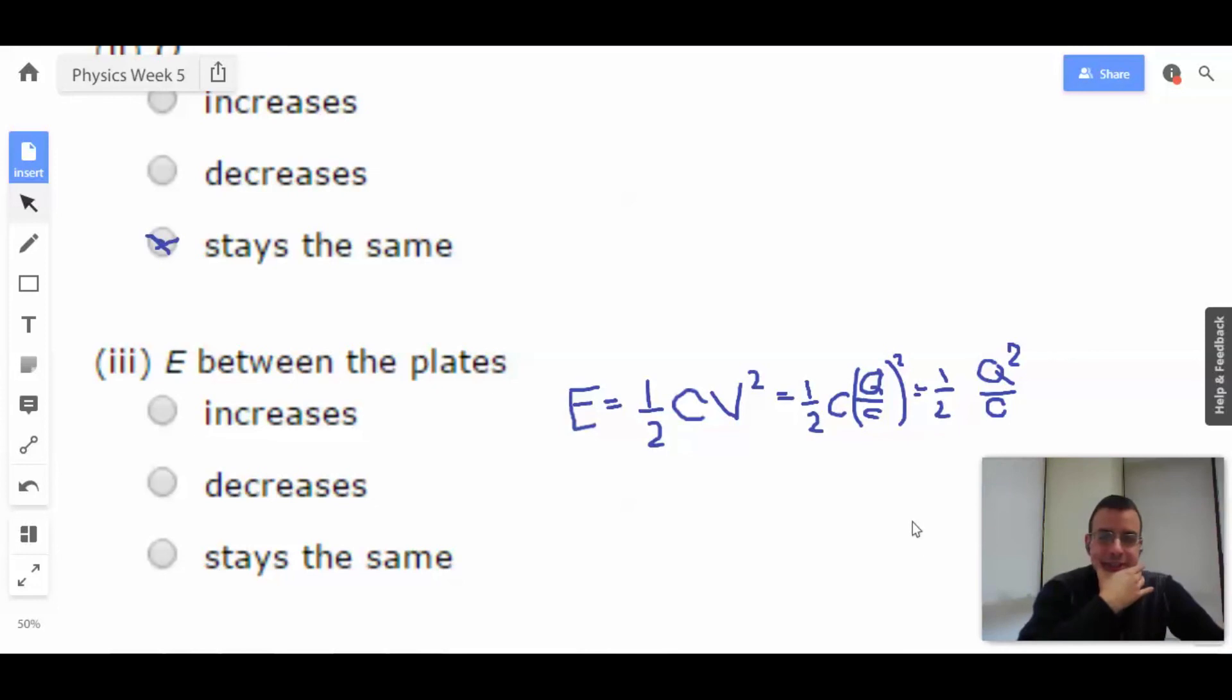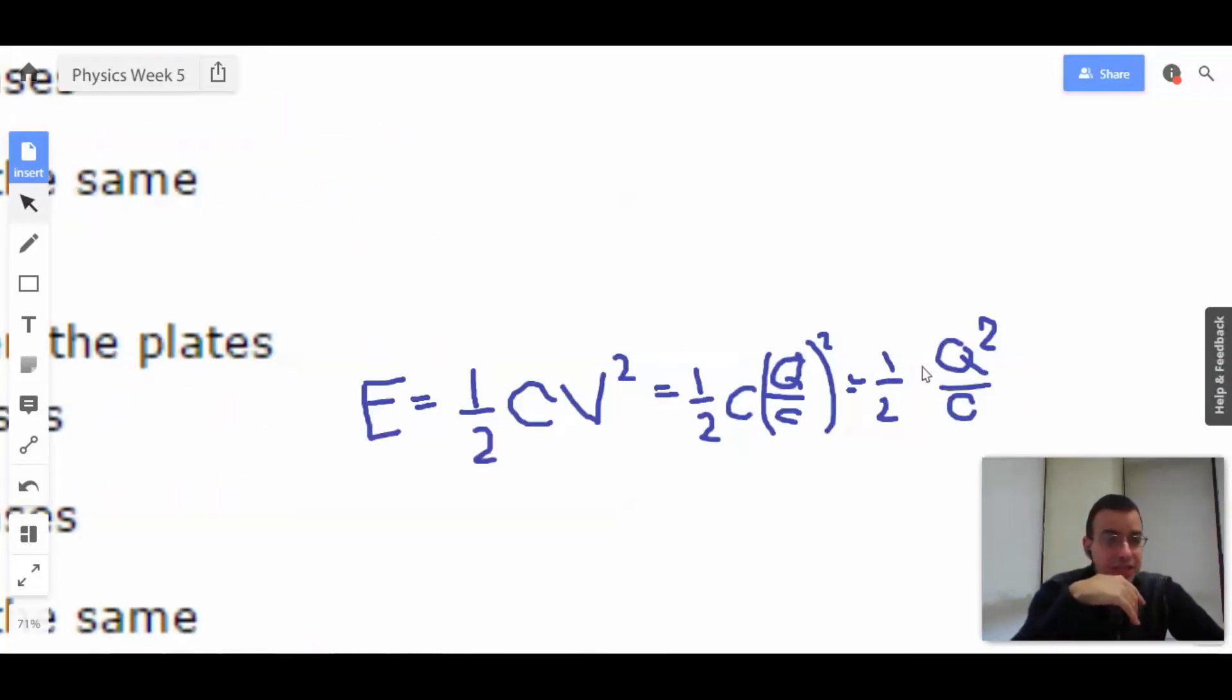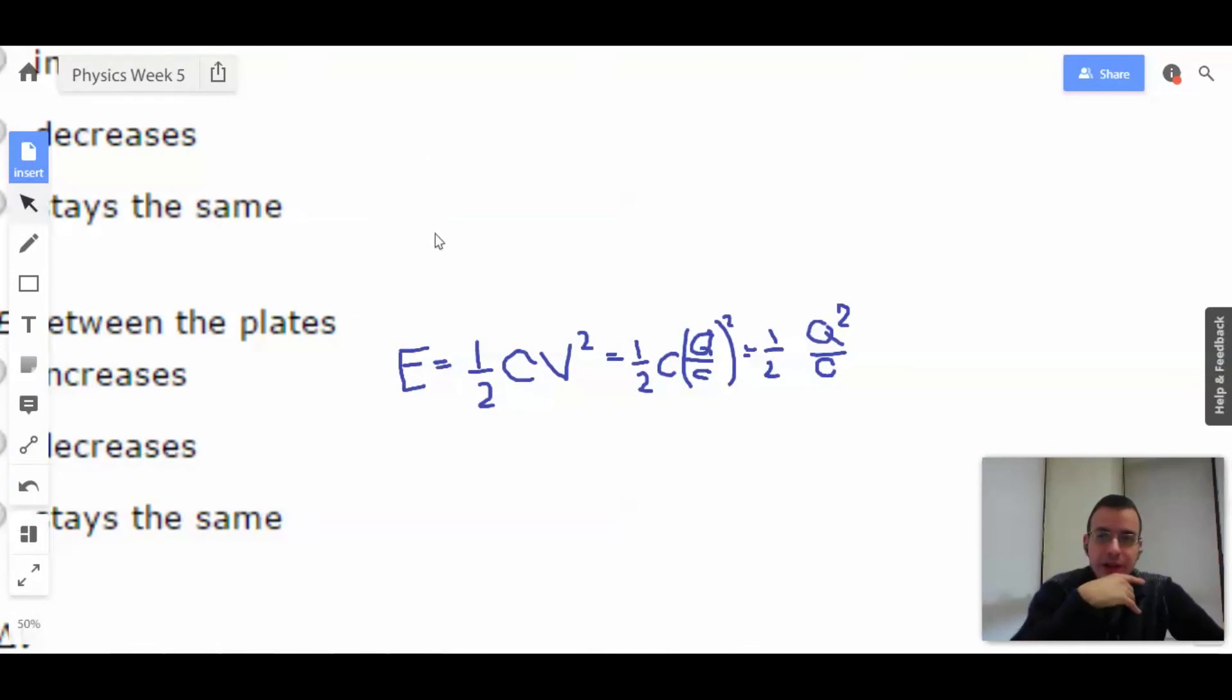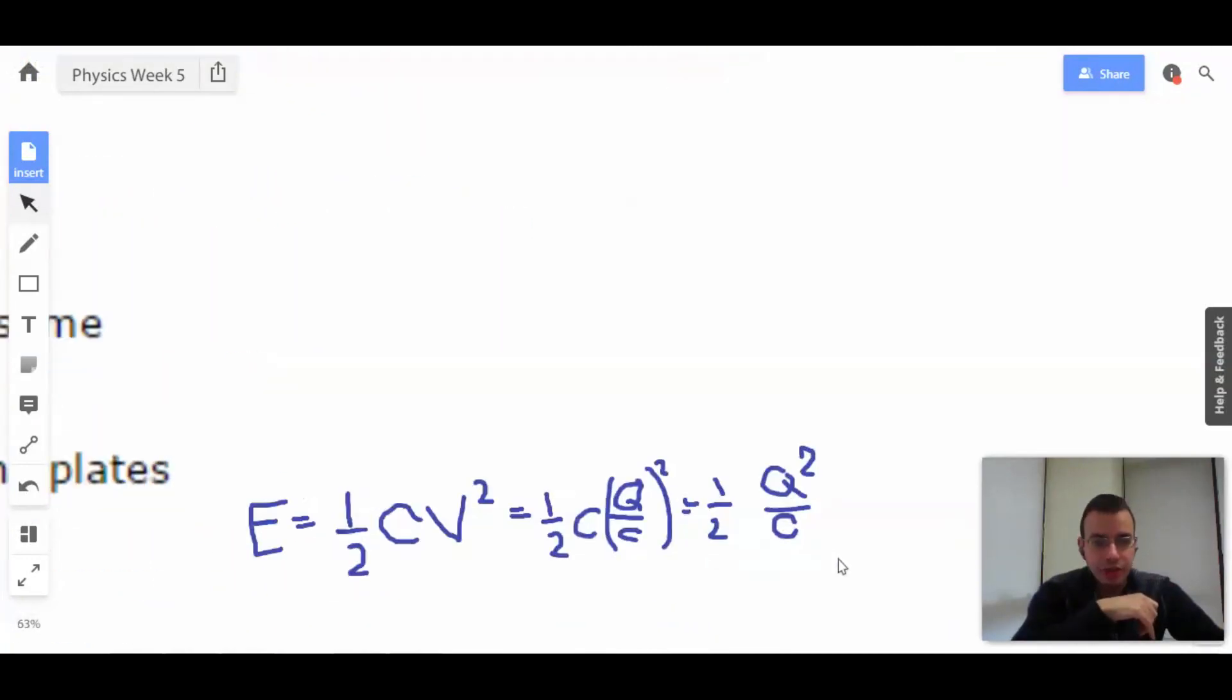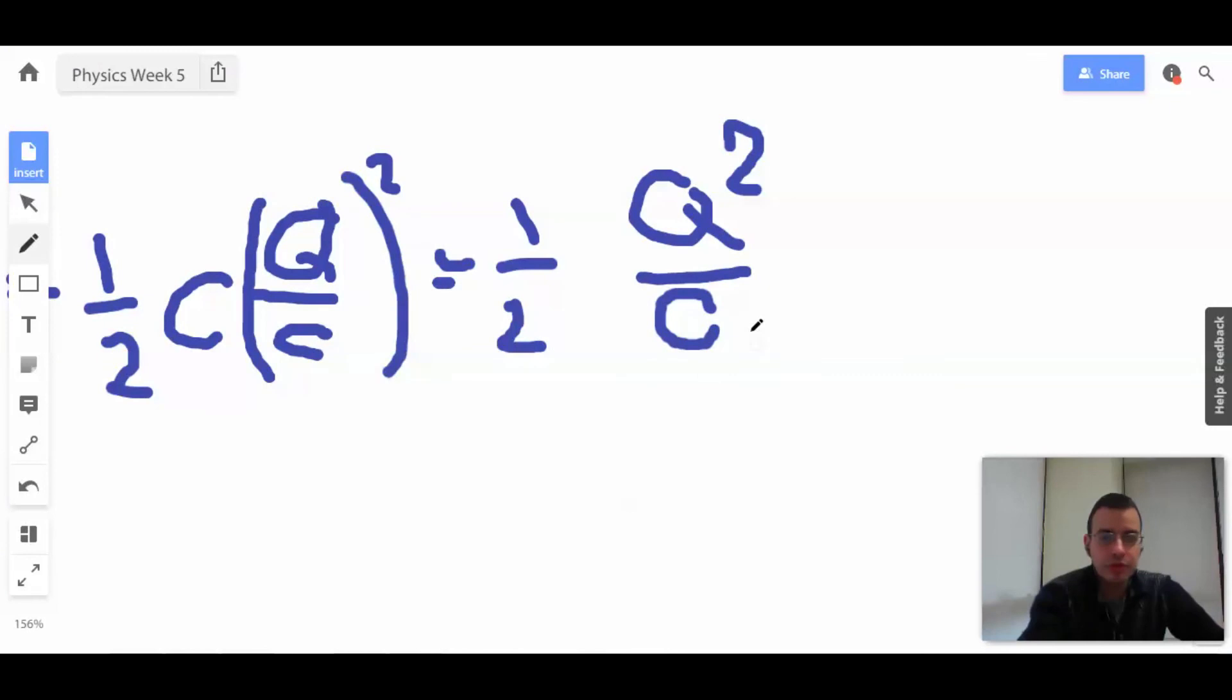Let's see if this makes sense. All right? So, Q stays the same, so Q doesn't matter. So, all that's going to matter here is C. So, we know that C lowers, decreases, so we're going to go like this.